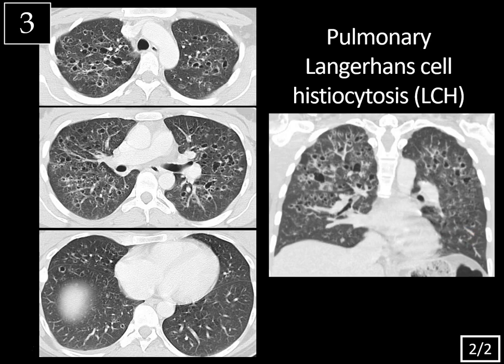One way to remember this is that centrilobular emphysema also tends to involve the upper lungs — that's smoking-related emphysema — as well as RBILD, respiratory bronchiolitis interstitial lung disease, another smoking-related disease with upper lung predominance. One of the main differential diagnoses would be cystic fibrosis, since at first glance this could look like irregular bronchiectasis. However, coronal reformats are helpful, showing that these are all individual cysts — not connected — just isolated cystic regions as opposed to a contiguous tubular structure.